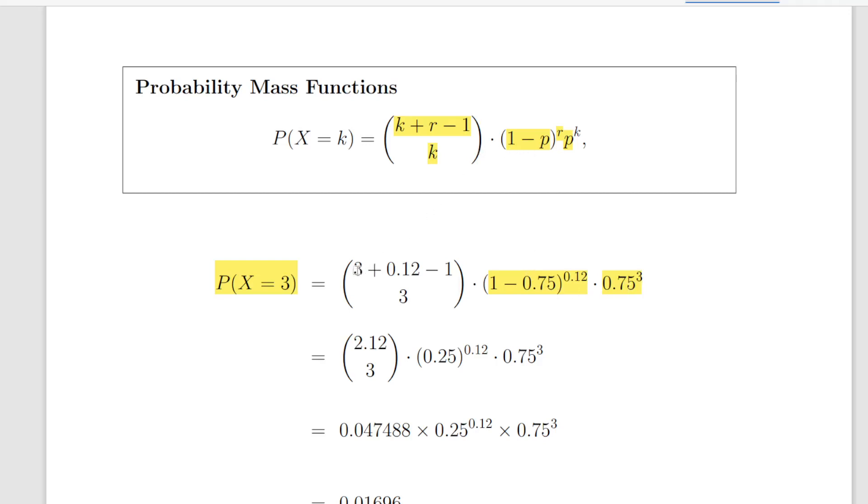Looking at the binomial coefficient, what we have there is k equal 3, r is equal to 0.12, minus 1 is minus 1, and from that, choose 3.